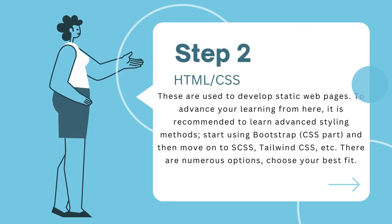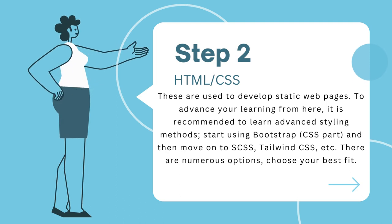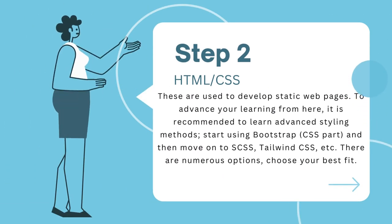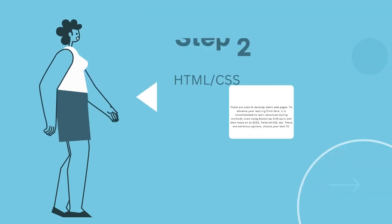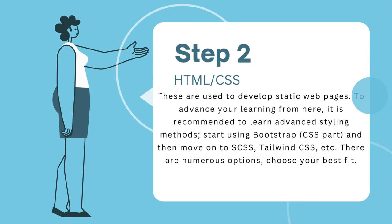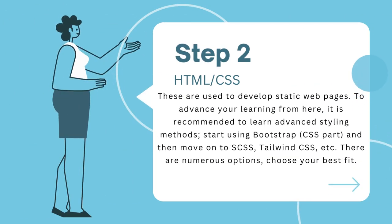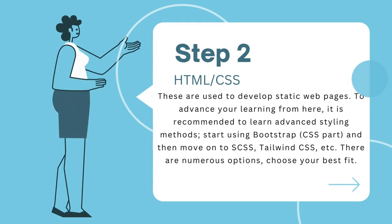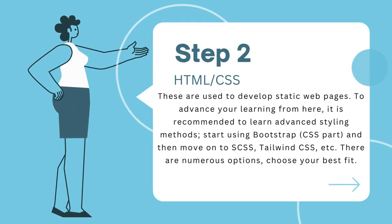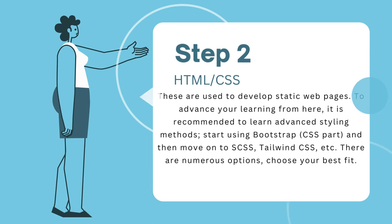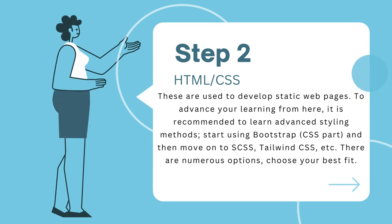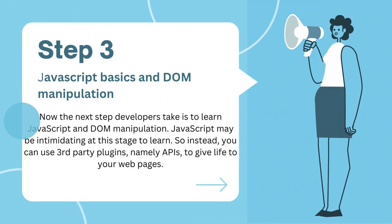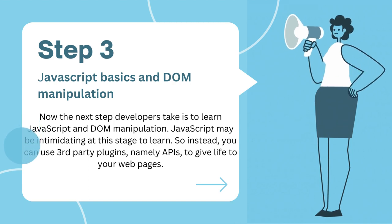Step 2: HTML and CSS. The very fundamentals for any web developer are HTML and CSS. These are used to develop static web pages. To advance your learning from here, it is recommended to learn advanced styling methods, start using Bootstrap, CSS frameworks, and then move on to SCSS, Tailwind CSS, etc. There are numerous options — choose your best fit.